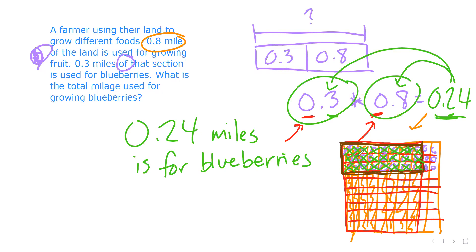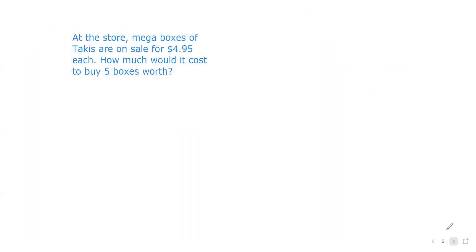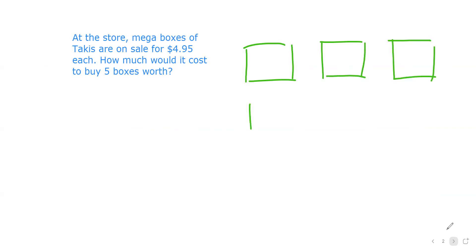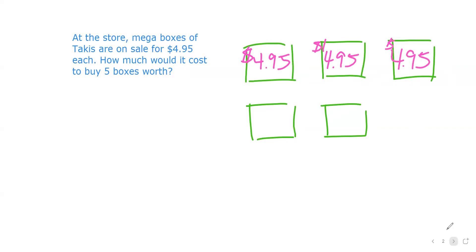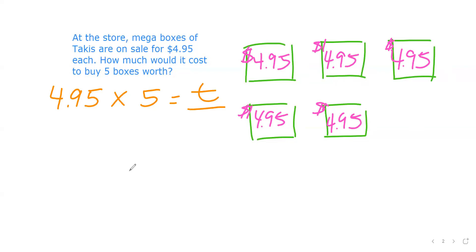Let's move on to our second question. At the store, mega boxes of Takis are on sale for four dollars and ninety-five cents each. How much would it cost to buy five boxes? I can model this: I have five mega boxes that I want to buy, and each mega box is four dollars and ninety-five cents. This picture is a model — it shows five boxes each at four ninety-five. The equation is four dollars and ninety-five cents multiplied by five boxes to get the total.